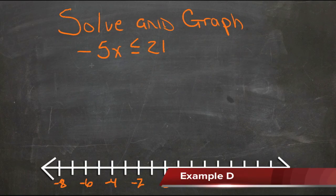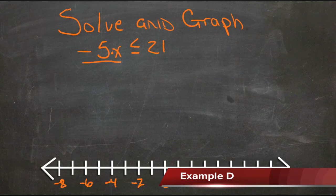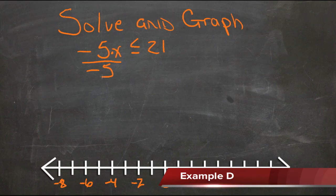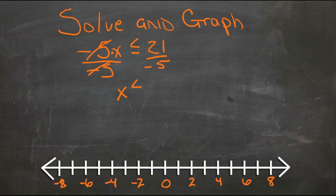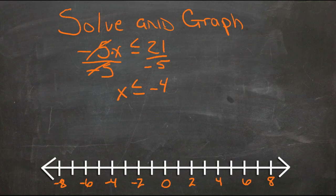In example D, the only difference we have here is that instead of subtraction or addition, we have multiplication. So we'll get rid of this negative 5 by dividing both sides by negative 5 since we're multiplying at the moment. Those negative 5s will cancel. 21 divided by negative 5 would mean that we'd have x is less than or equal to negative 4 and 1 fifth.